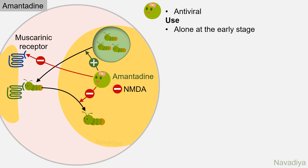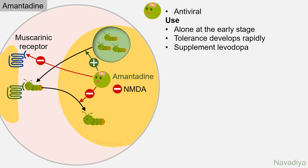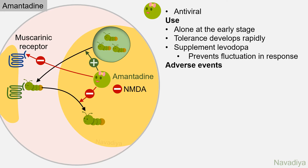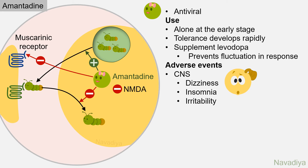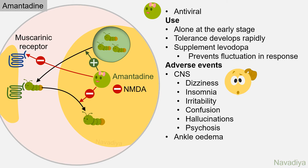Amantadine is used alone at the early stage of disease; however, tolerance develops rapidly so it works only for a few weeks. It is also used to supplement levodopa in advanced disease to prevent fluctuation in response. Adverse effects include CNS effects like dizziness, insomnia, irritability, confusion, hallucinations, and psychosis with high dose. Other adverse events are ankle edema, livedo reticularis, and heart failure.